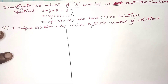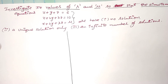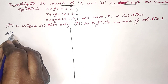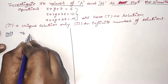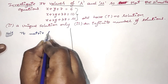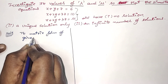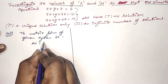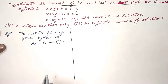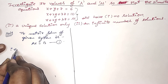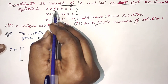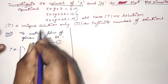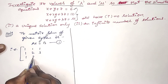First of all, as usual, we have to find the ranks of A and the augmented matrix. Write the matrix form of the given system: A x = B. Matrix A is formed by writing the coefficients — first row: 1, 1, 1; second row: 1, 2, 3; third row: 1, 2, lambda.